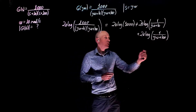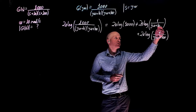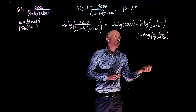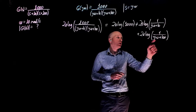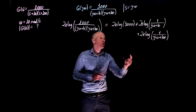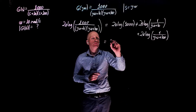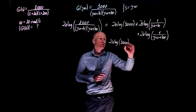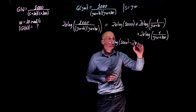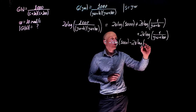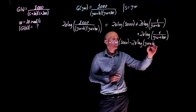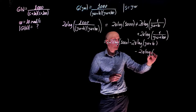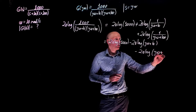To make things simpler, we can move the (j omega plus 10) and (j omega plus 100) terms upstairs, which makes the calculation a lot simpler. When you do that, those terms become negative 20 log. So this equals 20 log of 1000 minus 20 log of (j omega plus 10) minus 20 log of (j omega plus 100).